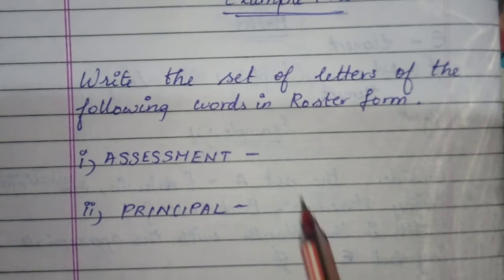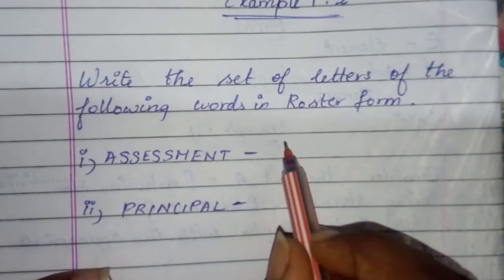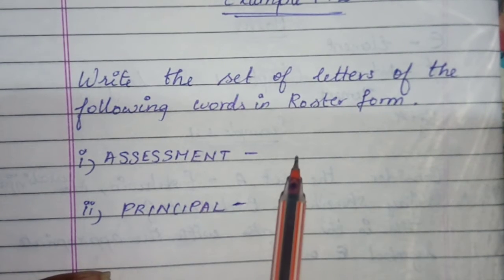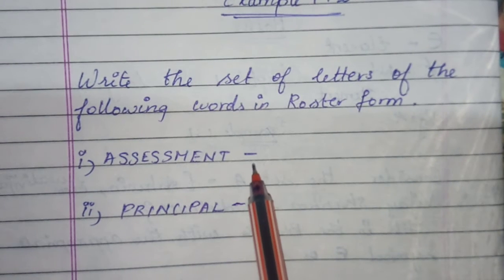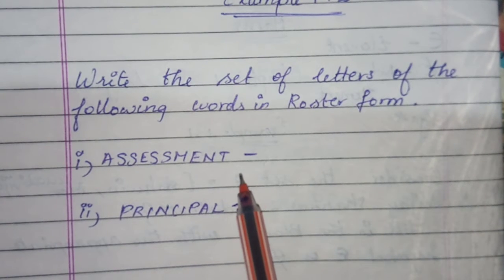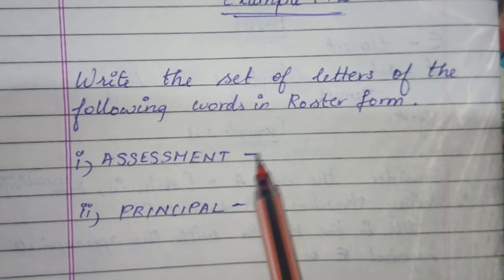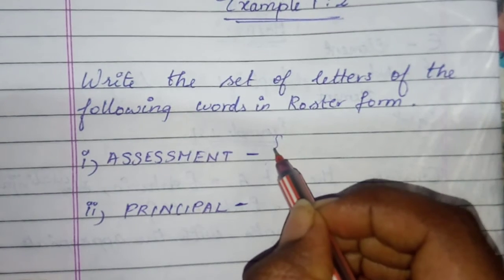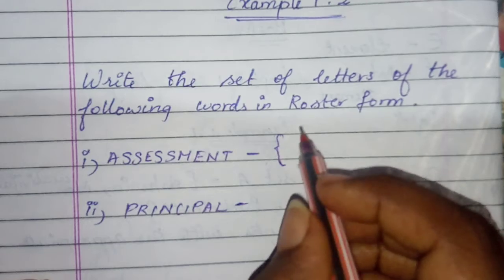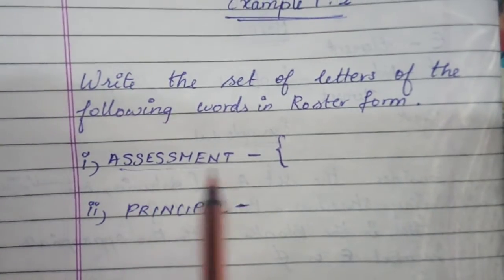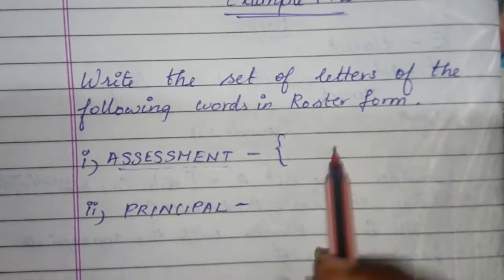First one, how we should write it. Your roaster form should be in curly brackets. Without curly brackets, we should not write the roaster form. Start with curly bracket. We should never repeat the letters given here.